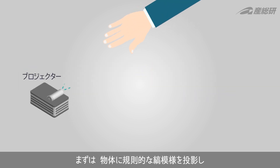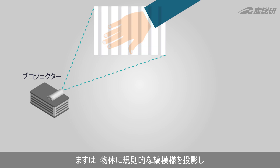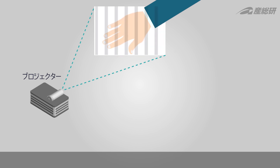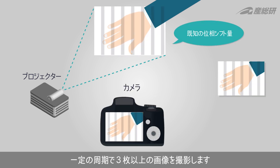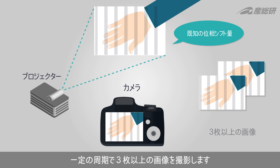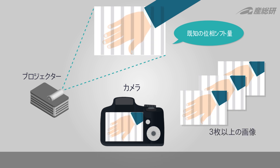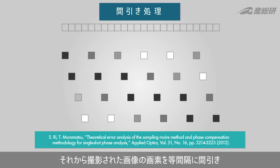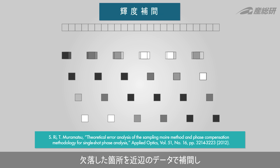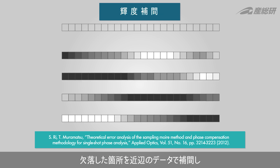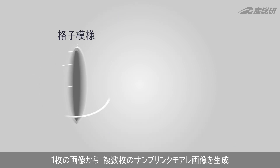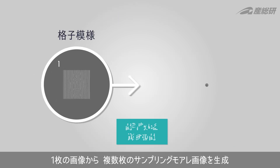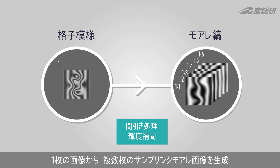First, a regular fringe pattern is projected on an object and three or more images are captured at a constant interval. Subsequently, by performing downsampling with a sampling pitch and interpolation using the neighboring intensity data, multiple sampling MOIR images can be generated from a single image.